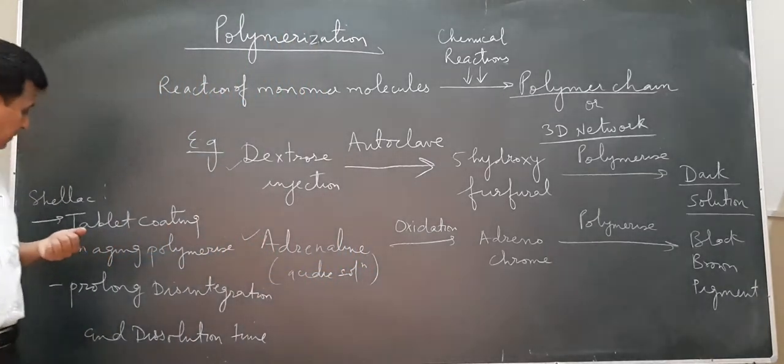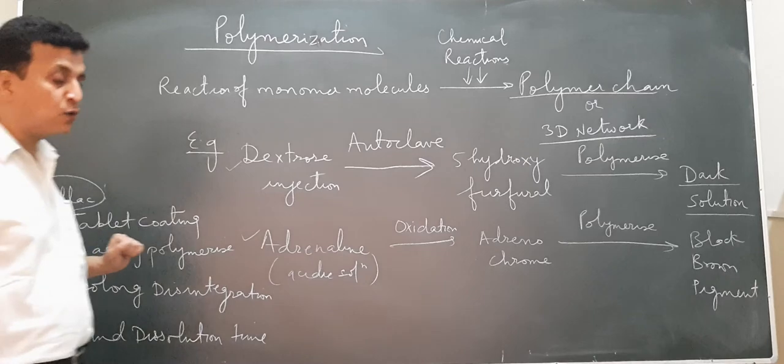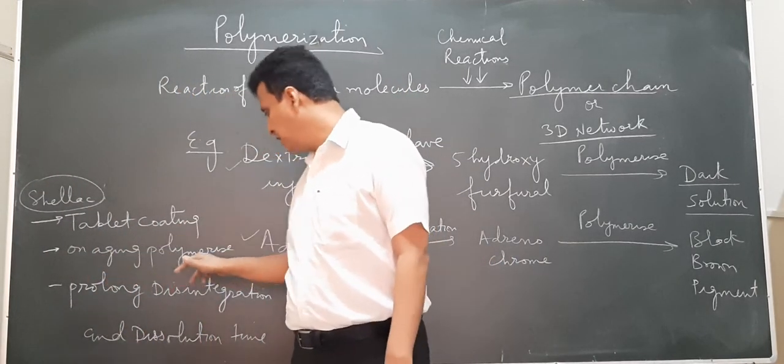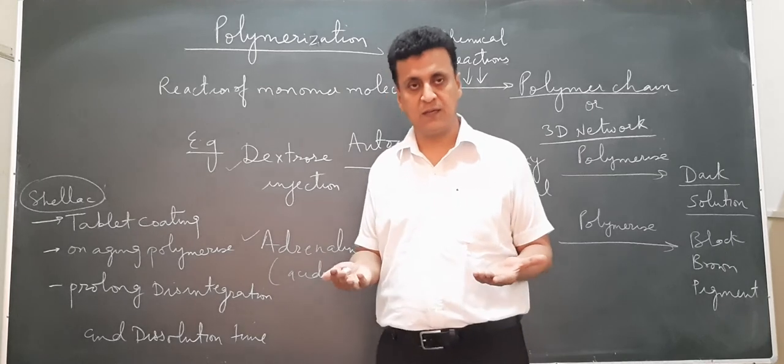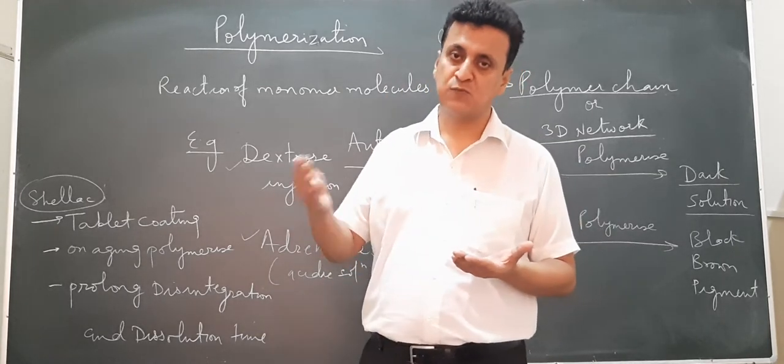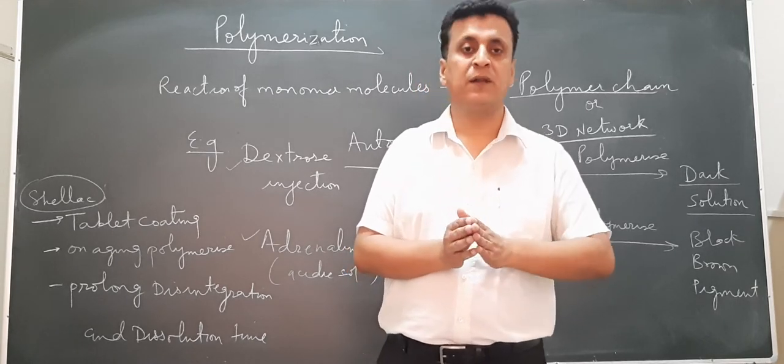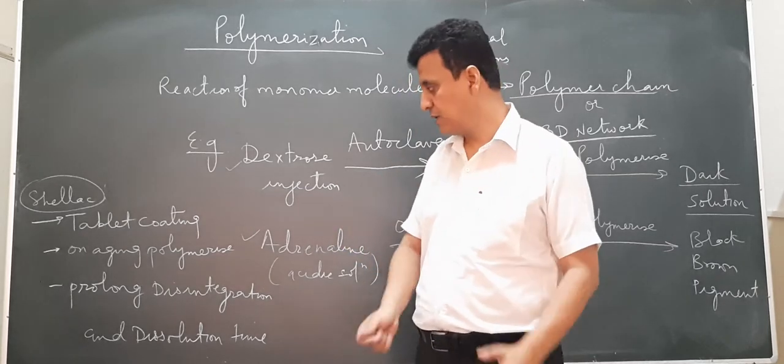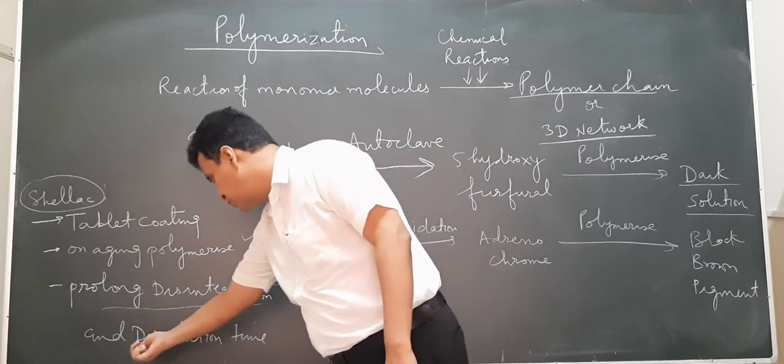One important example is shellac. Shellac is used for coating tablets. On aging, it gets polymerized. Aging means when tablets are kept for a long time, their age increases. What happens? Shellac polymerizes. After polymerization, shellac becomes somewhat hard in nature.